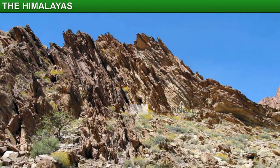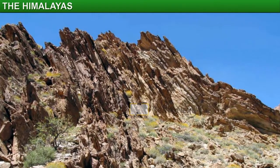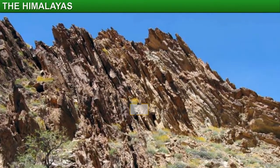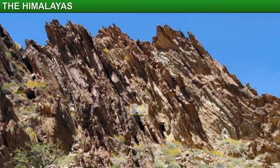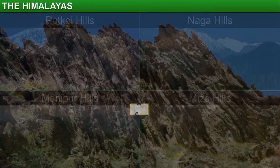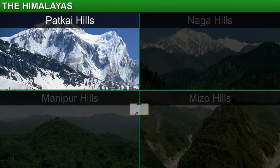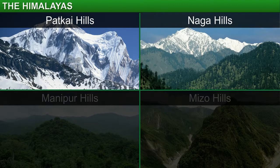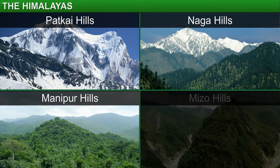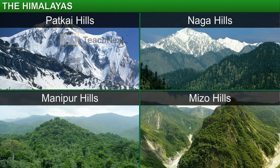The Puravanchal range is made up of the Patkai hills, the Naga hills, the Manipur hills, and the Mizo hills.